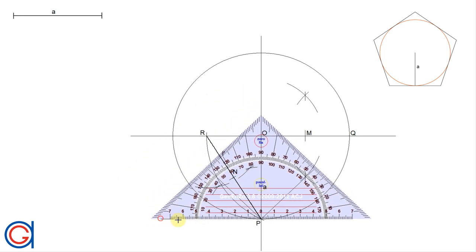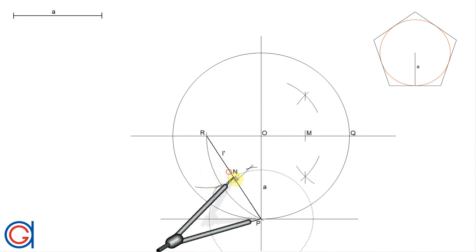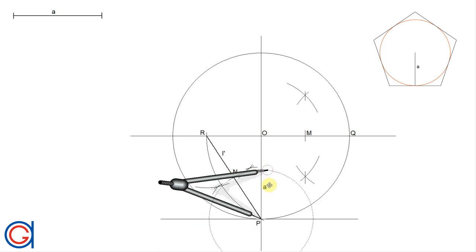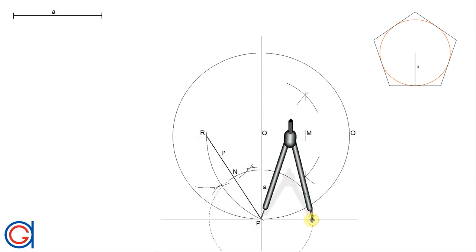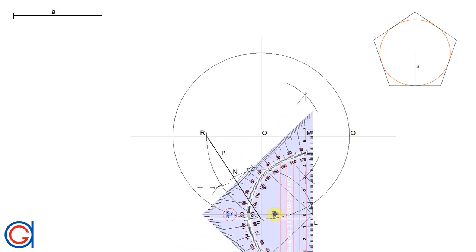The next step is to draw a horizontal line parallel to the center diameter and passing through point P. Setting our compass on point P with radius PN, we scribe an arc to the right until it cuts the horizontal line at a new point L. From point L we draw a perpendicular line until it cuts the circle at a new point which we call K.